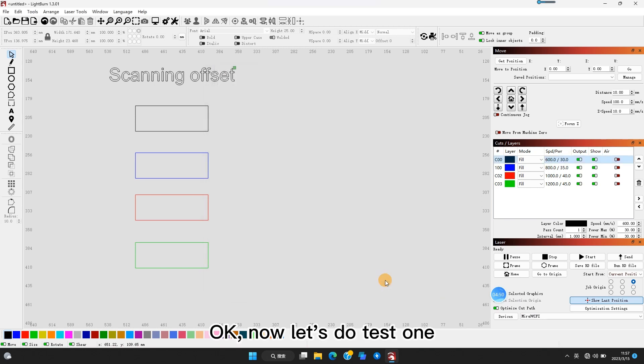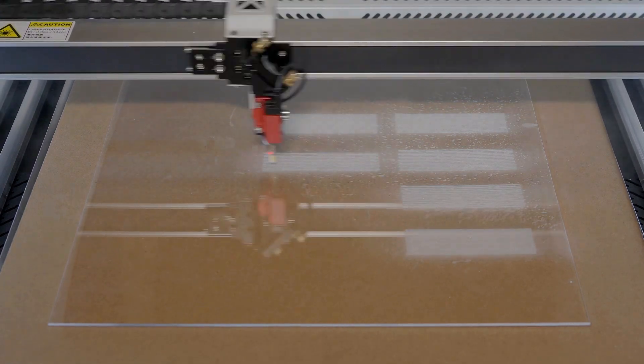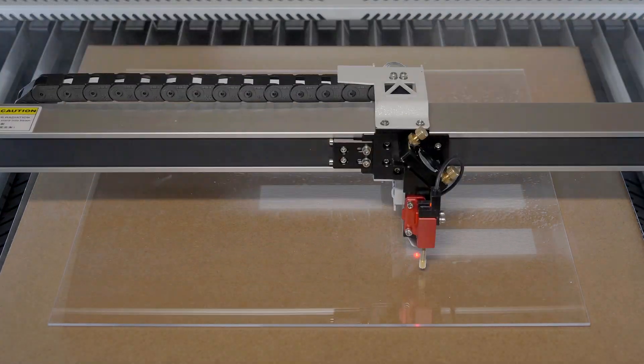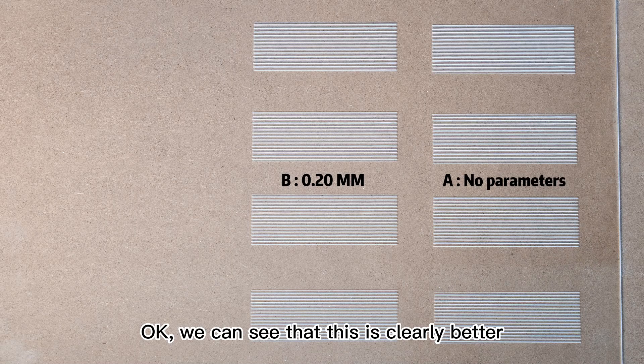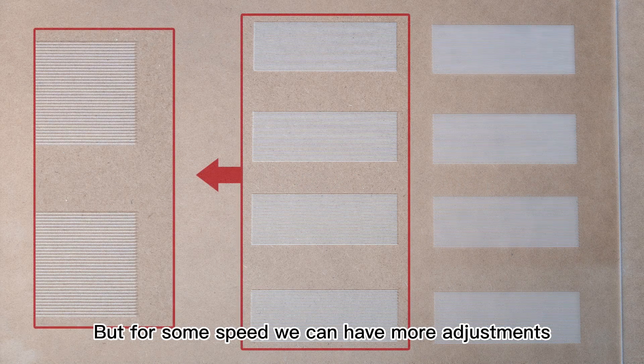Okay, now let's do test 1. Okay, we can see that this is clearly better than when no parameters are applied. But for some speeds, we can have more adjustments.